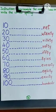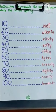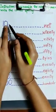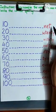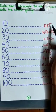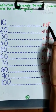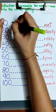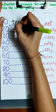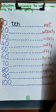First we have number 10 and we have N-E-T. What is the correct number name? What is the correct spelling of the number name 10? T-E-N, ten.